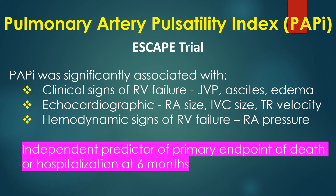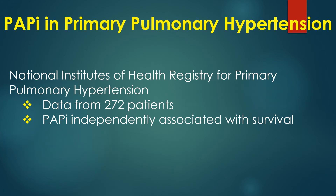PAPI was an independent predictor of the primary endpoint of death or hospitalization at 6 months. PAPI was also found to be useful in primary pulmonary hypertension. In 272 patients from the National Institutes of Health Registry for primary pulmonary hypertension, evaluated by Masimba and colleagues, PAPI was independently associated with survival.